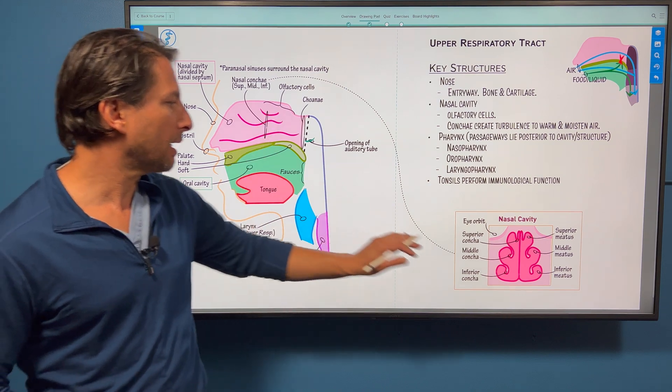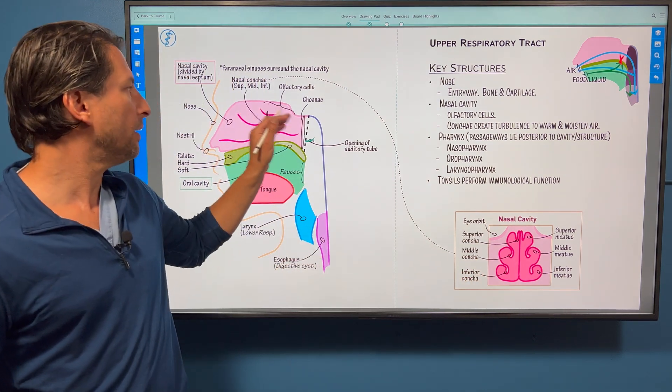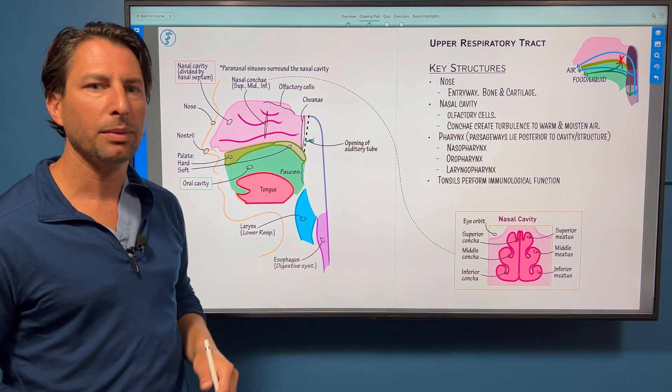Here's the nasal cavity. These conchae are pointed out: superior, middle, and inferior. And then the olfactory cells we bring to attention.